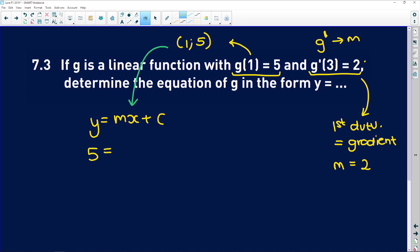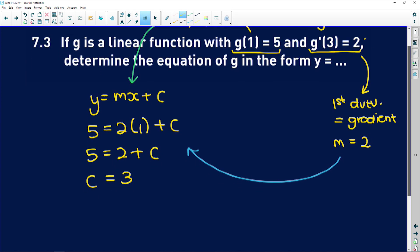5 is equal to, and also we substitute in the gradient, so 5 is equal to 2 times 1 plus c. So 5 is equal to 2 plus c and therefore c is equal to 3. So the equation of this linear function is y is equal to 2x plus 3.